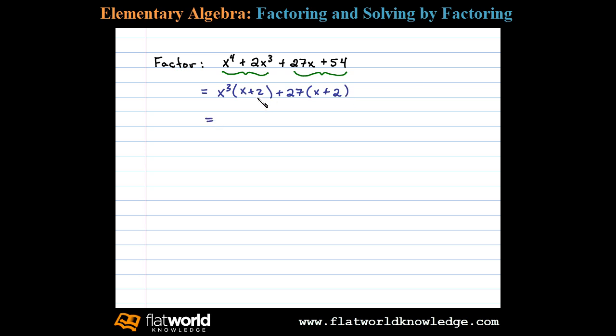Now x plus 2 can be thought of as the common factor of a binomial. We'll factor that out. If we factor out x plus 2, we'll be left with x cubed plus 27.